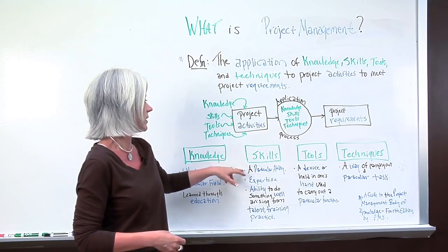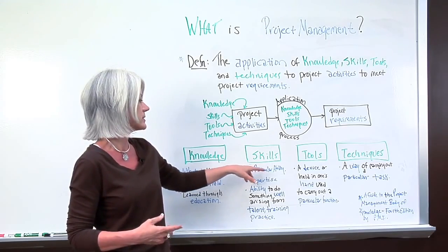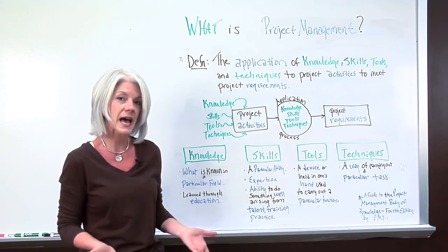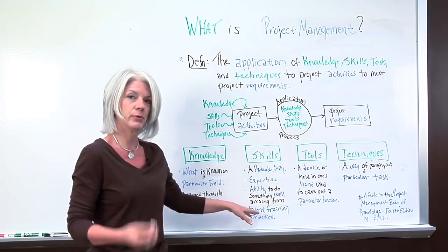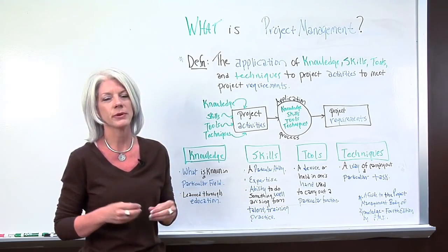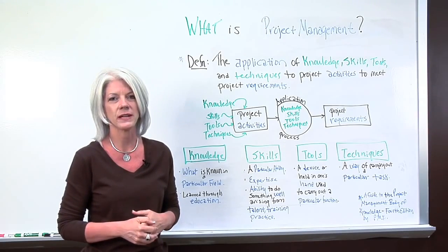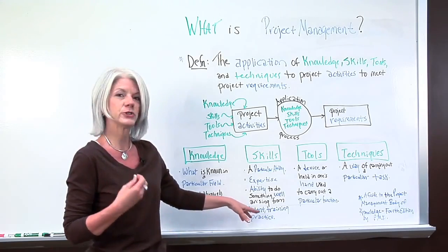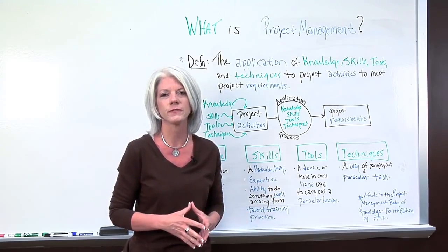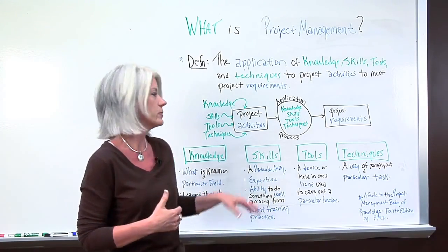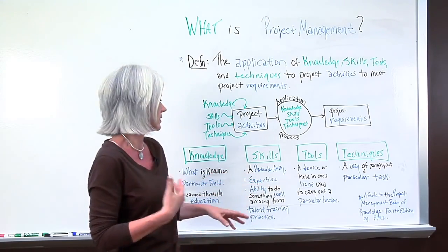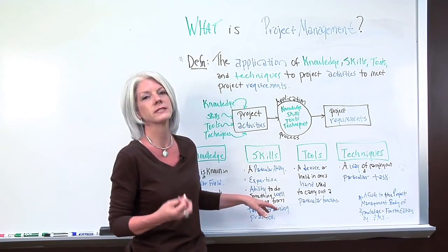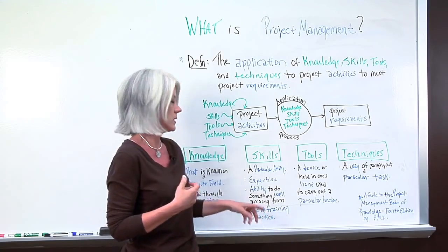Skills are a particular ability — our expertise, our ability to do something well — arising from either a talent we have, training, or even practice. Our skills in project management — you can see some of our other whiteboard sessions on the top skills required — but in order to hone those skills more effectively, we need training and practice. Just like sports figures or artists, to hone your skills and make them better, it's constantly learning and constantly growing. Some of us have an innate talent, but we take those talents and continue improving them with training and practice.